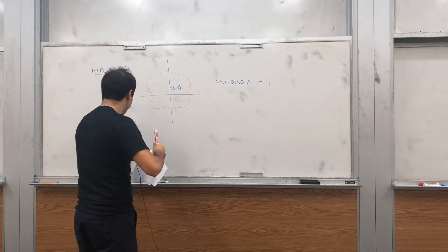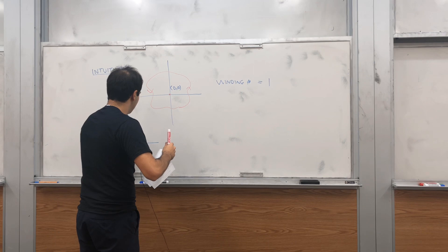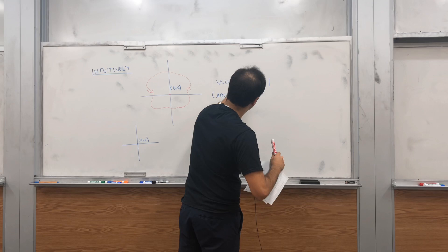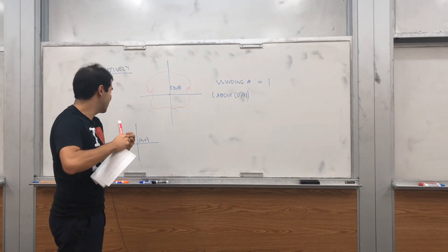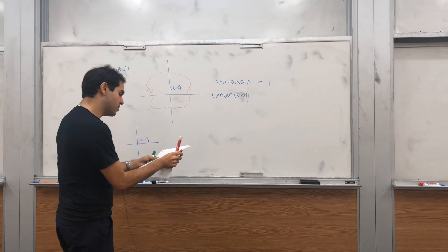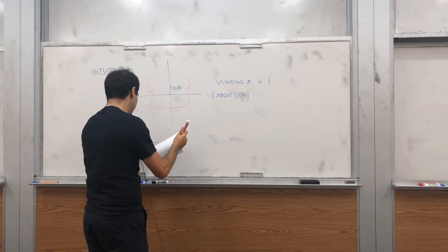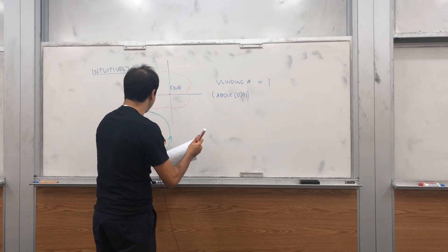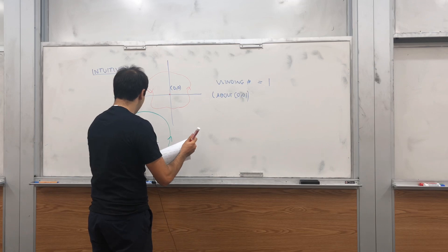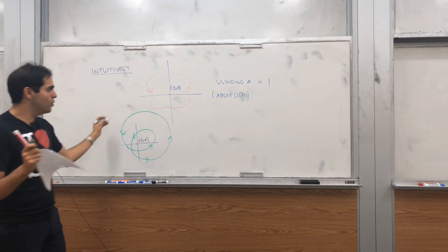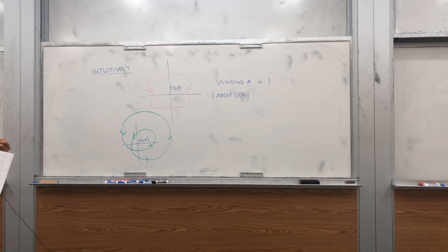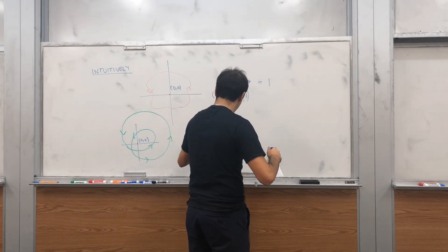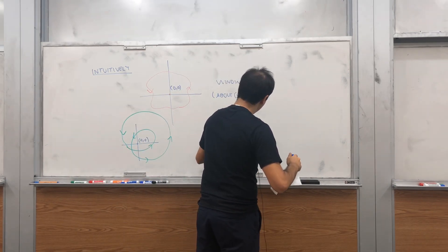Consider the following curve — it's always a winding number about the origin. To do it with a different point, just do it by translation. If you have this curve, it loops around zero, zero once, and then it loops around it twice, like this. Intuitively, we would like to say that the winding number of that curve is two.